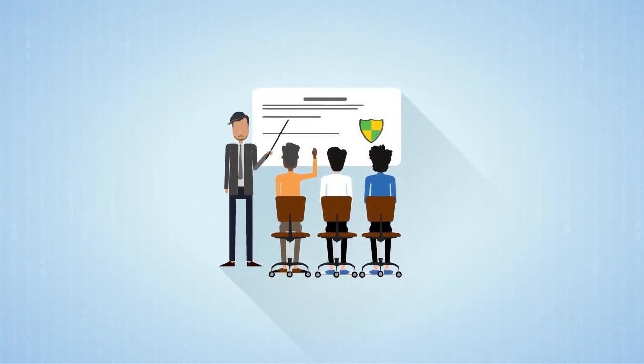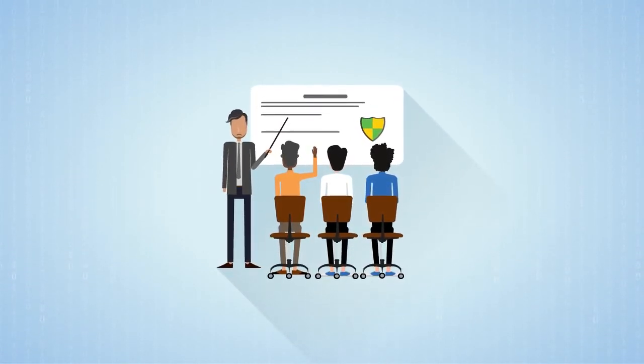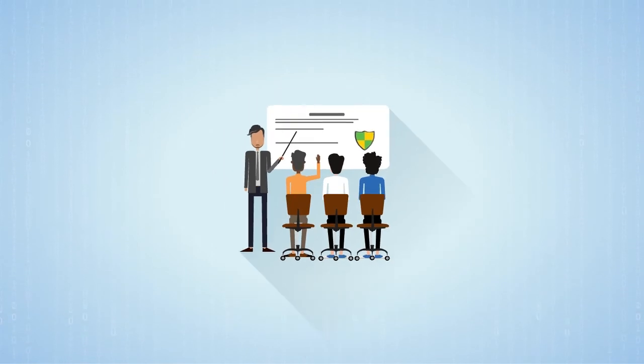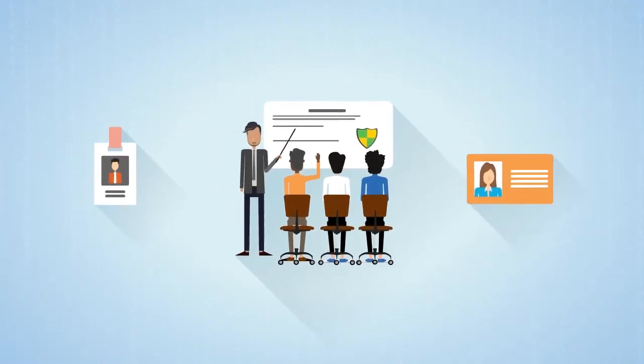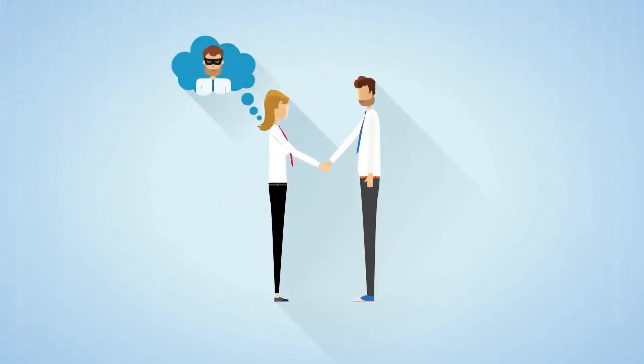Always politely ask for identification or authorization like a guest badge or card if someone seems like they don't belong. Policy may state that employees don't confront suspects but instead escalate suspicious people to a supervisor, security guard, or the security team.